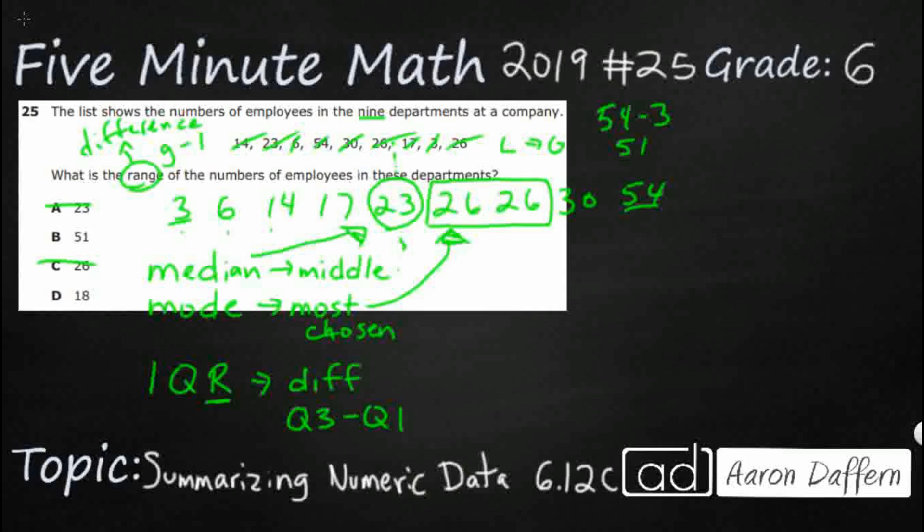Well, what we need to do is we need to take each of those halves and cut them in half. This first half has got four numbers, so if we want to cut in half, it's going to be right here. This is my quarter one, which means I need to find what is the midpoint between that 6 and that 14, and that's going to be 10.